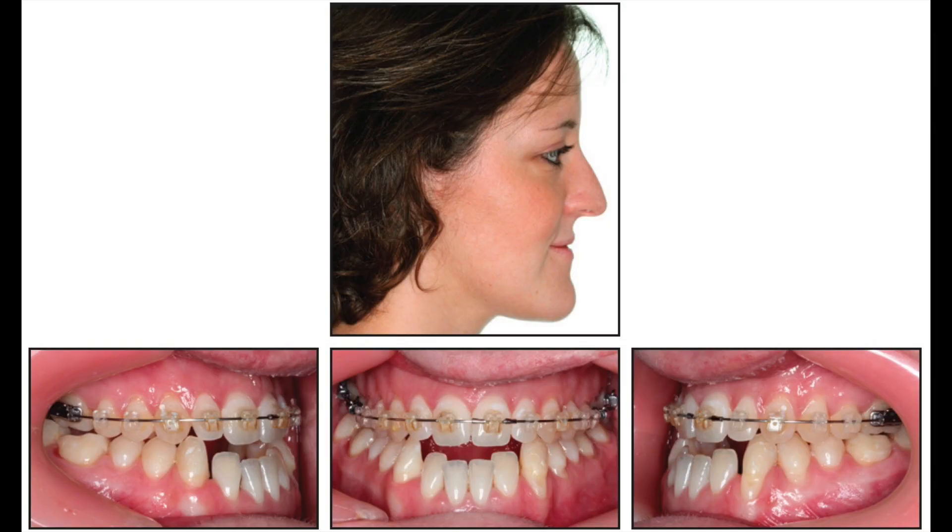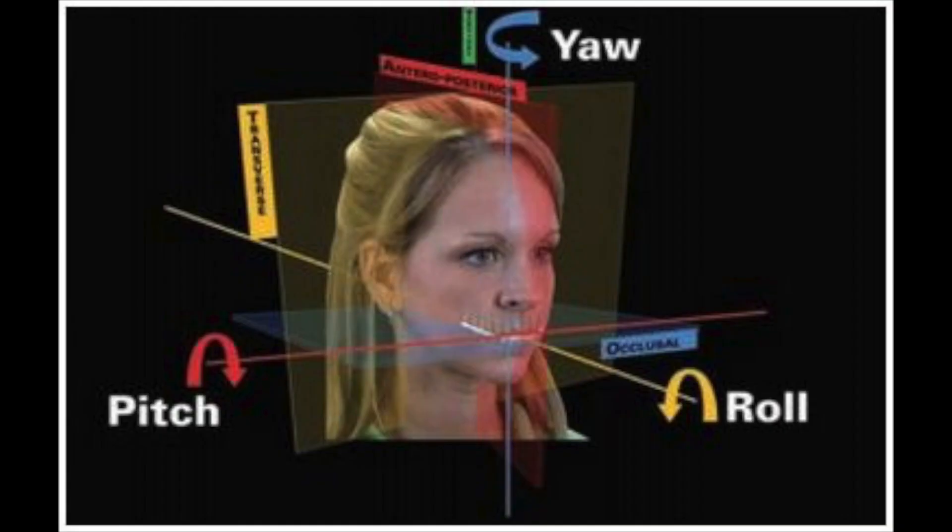Often patients will mask that in other ways — sometimes by growing a moustache, sometimes hairstyles, or sometimes by pitching their head forwards to mask that relationship. Or when they smile, instead of smiling with both teeth, they will smile with the upper teeth only and their mouth slightly open.